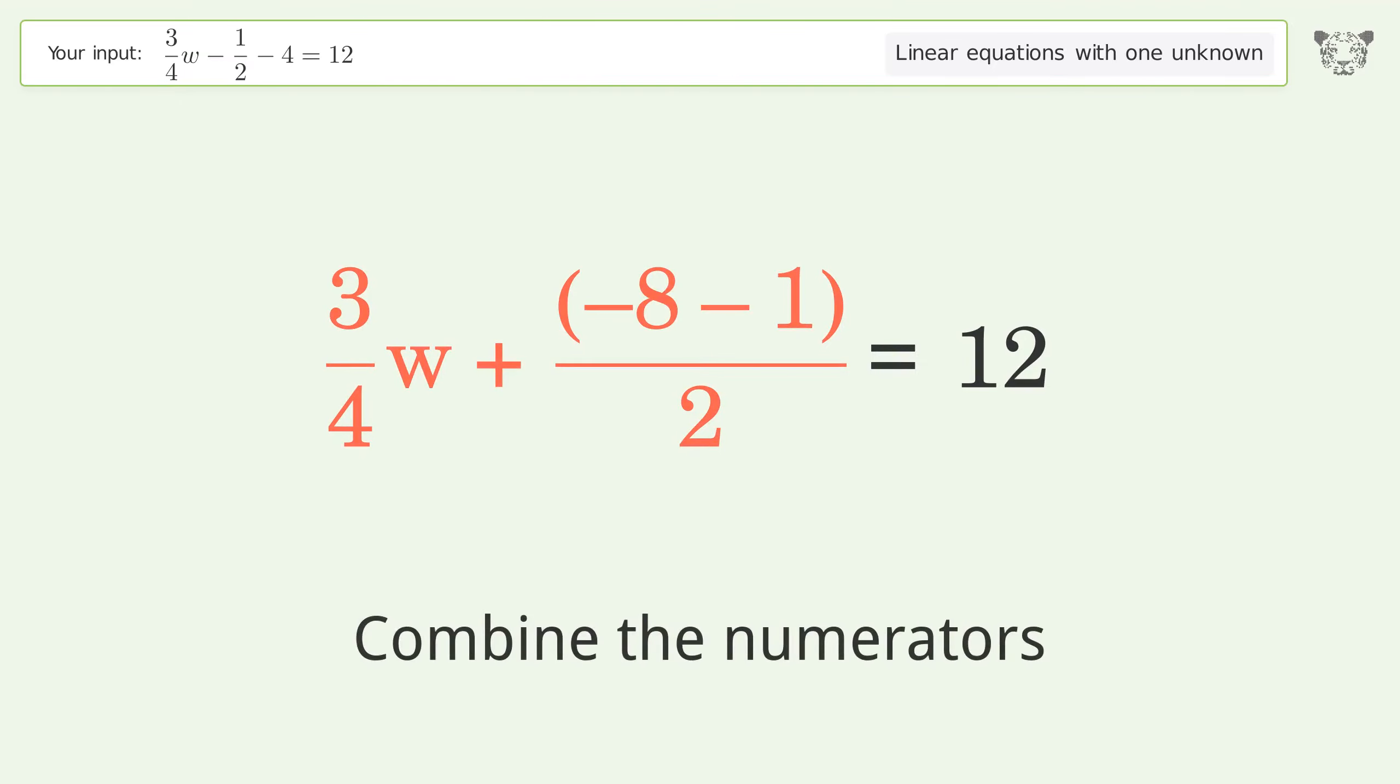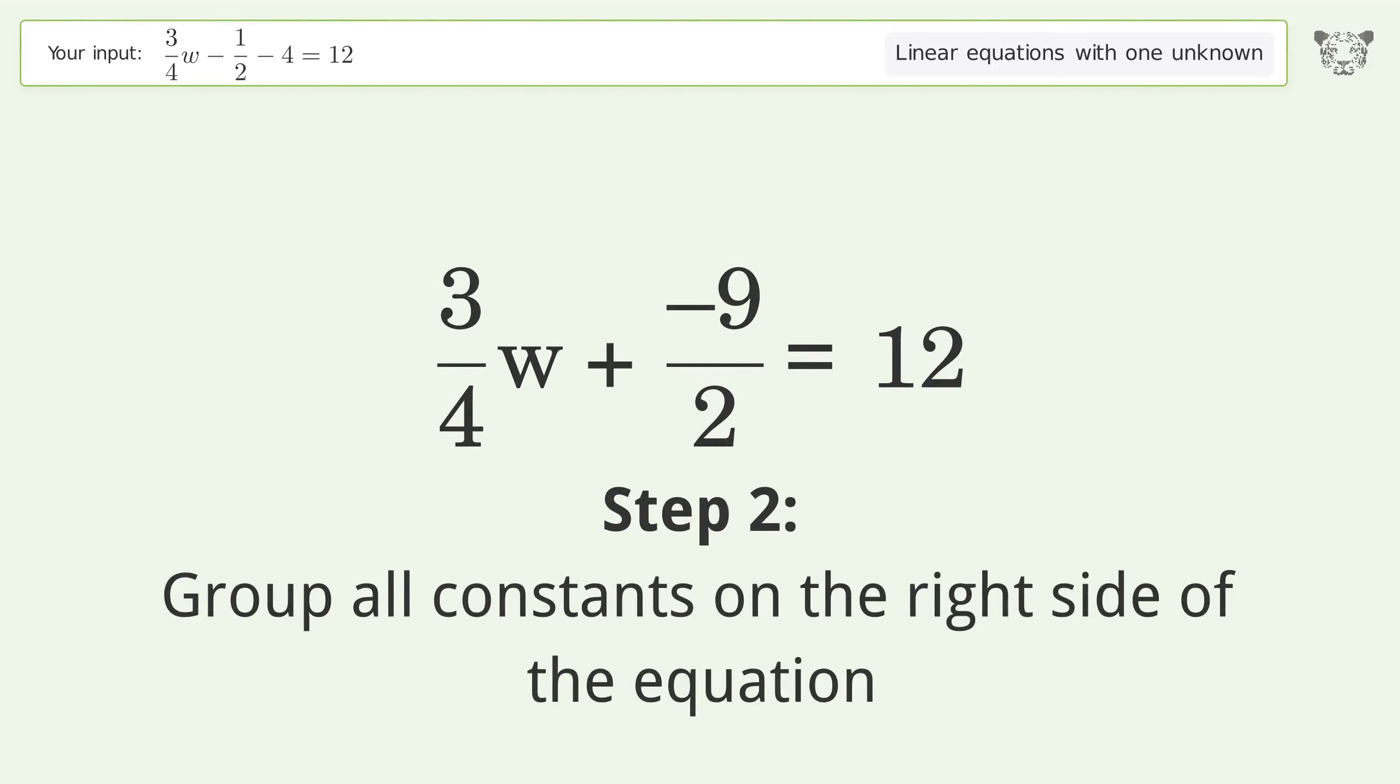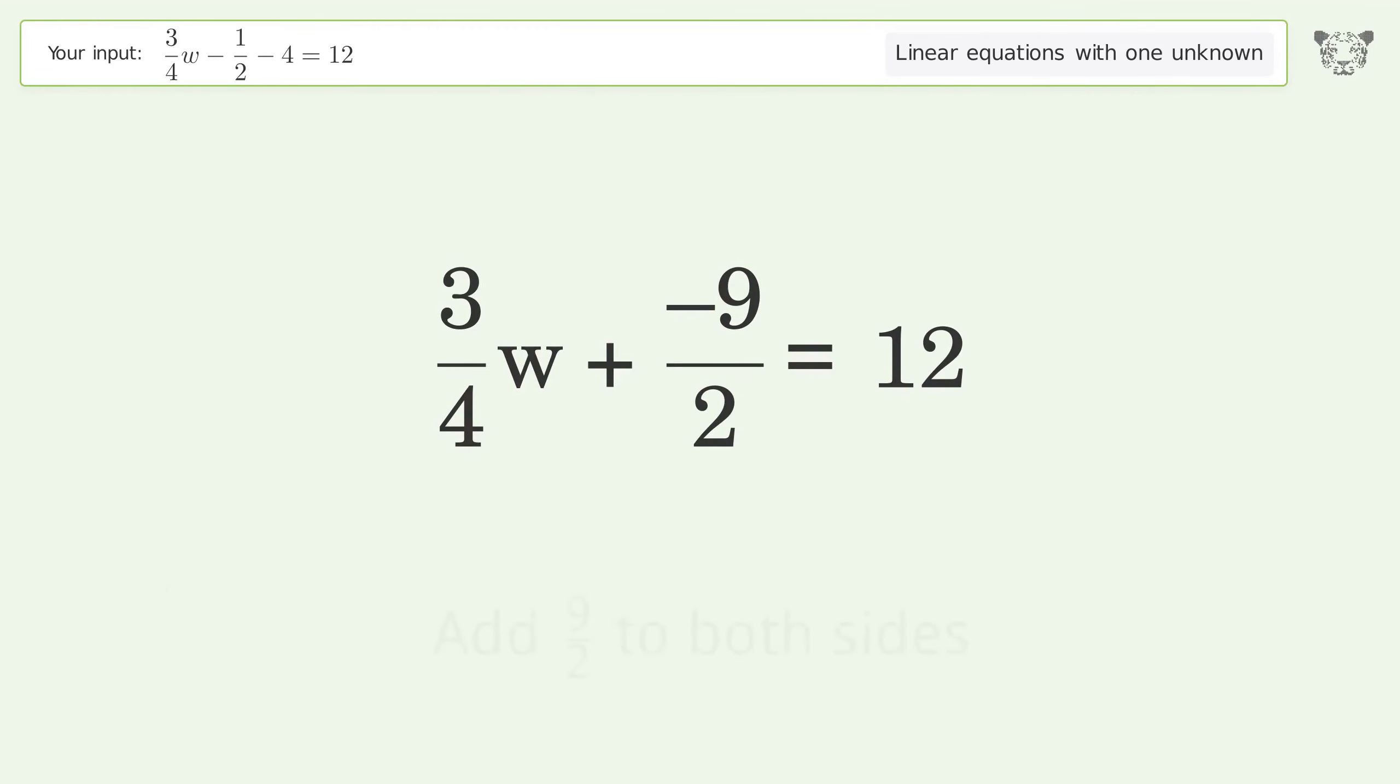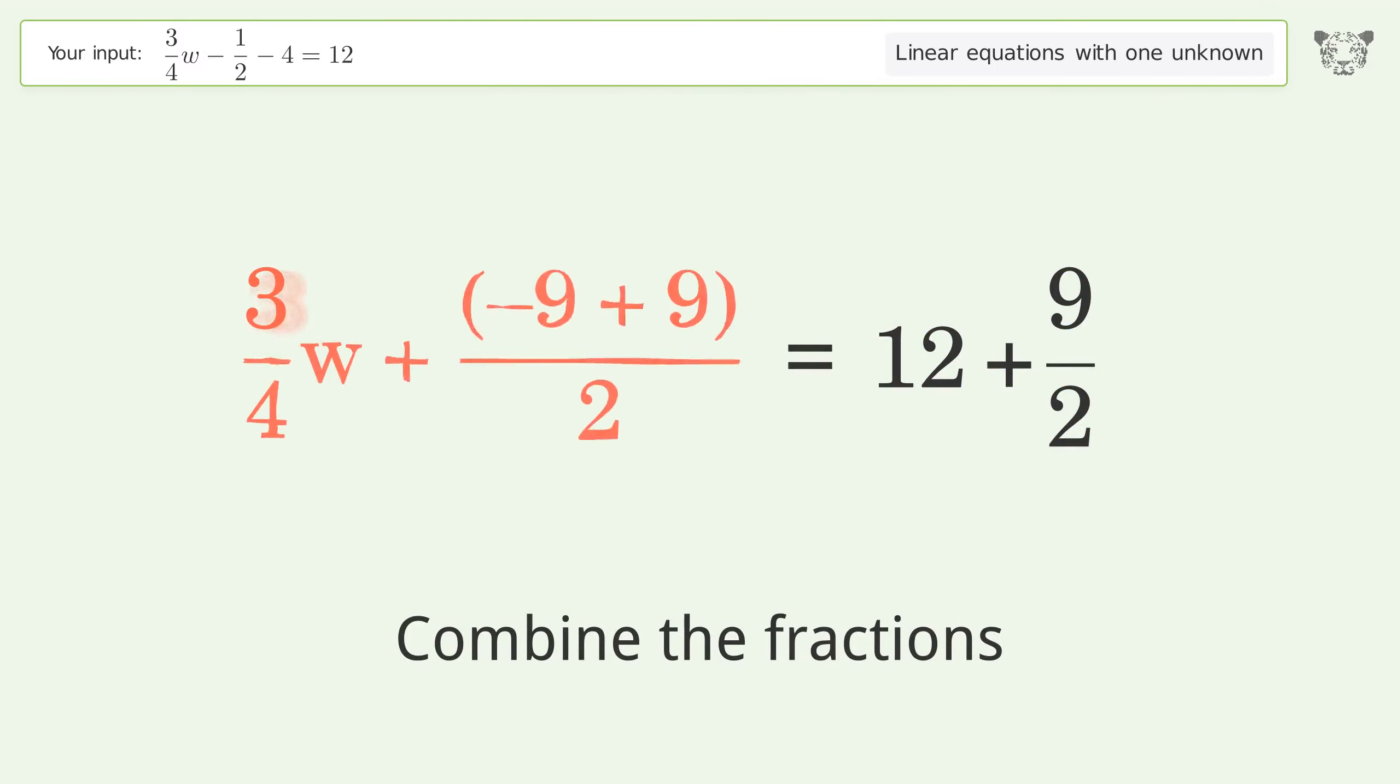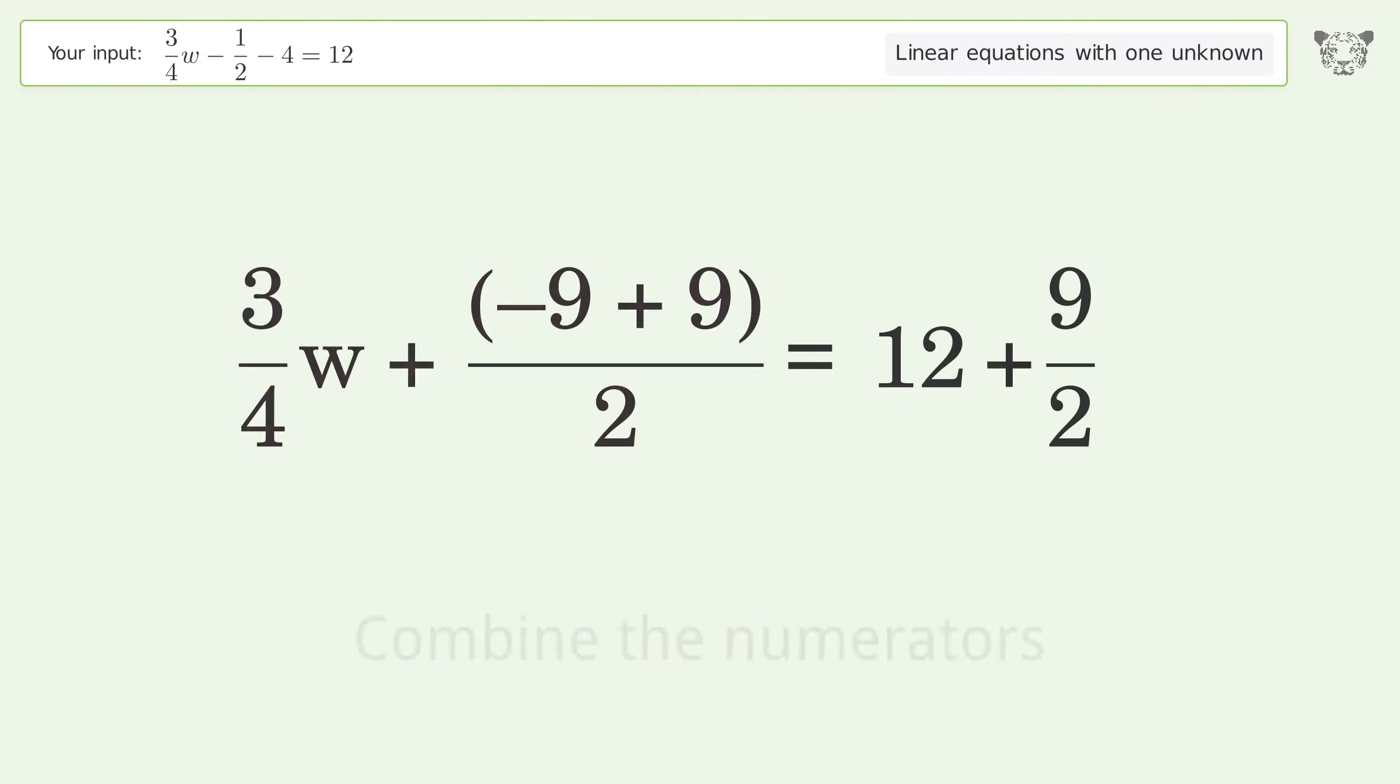Combine the numerators, group all constants on the right side of the equation, add 9 over 2 to both sides. Combine the fractions, combine the numerators.